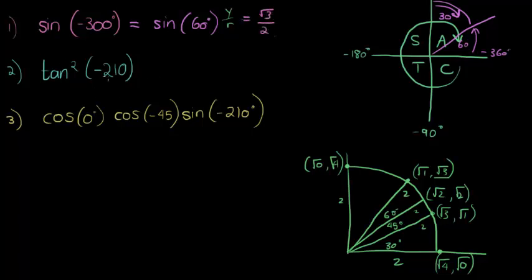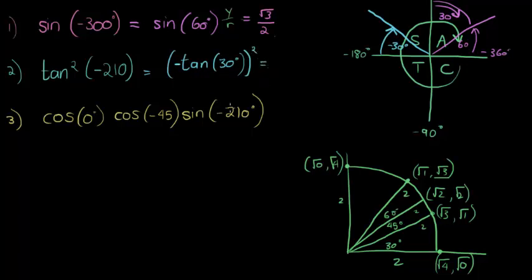Now we have tan squared of negative 210. Negative 180 and another 30 degrees would be 210, so this is 30 degrees. Negative 210 would be in the second quadrant where sine is positive, so tan will be negative. However, we are squaring. So this is actually tan of 30 degrees, which is negative, but it's being squared. Tan is y over x, so we have square root of 1 over square root of 3, with a negative that is being squared, and that gives me 1 over 3.